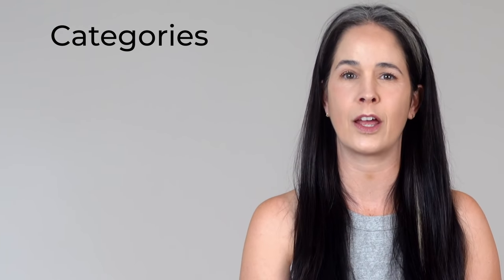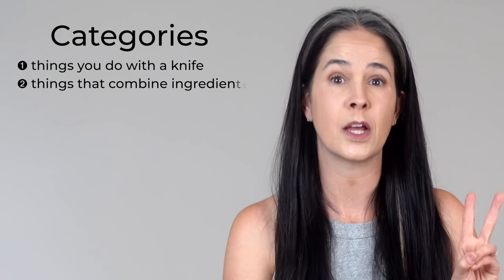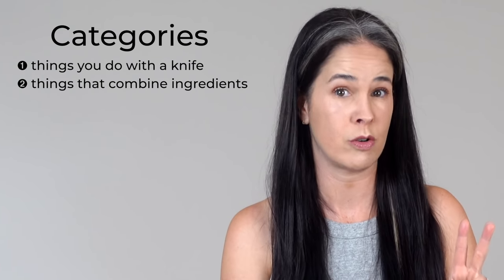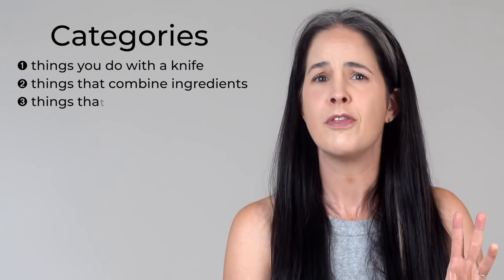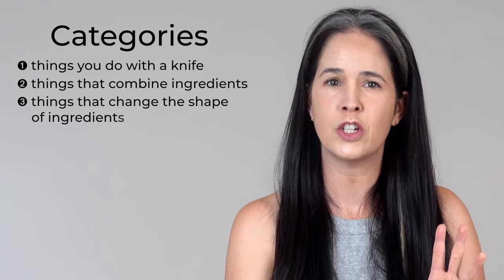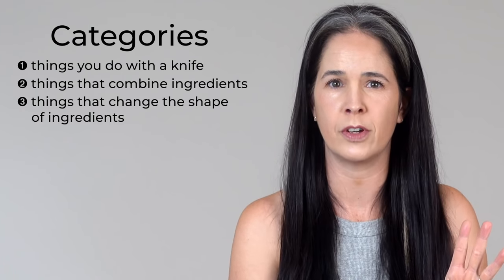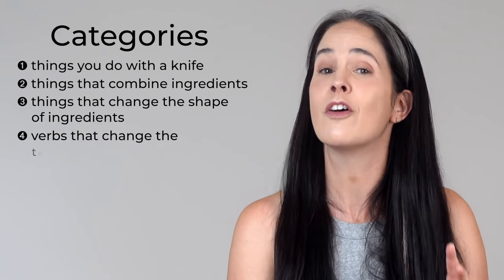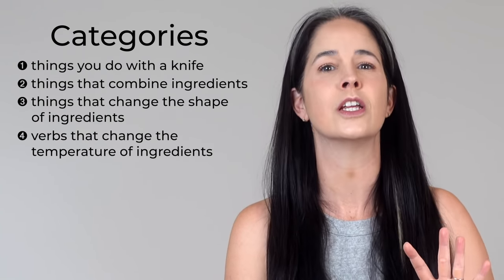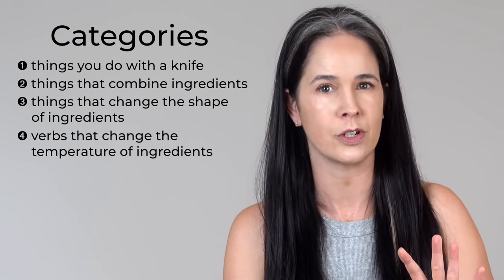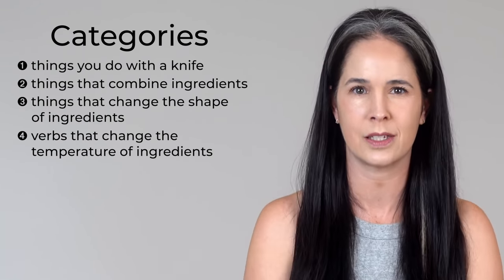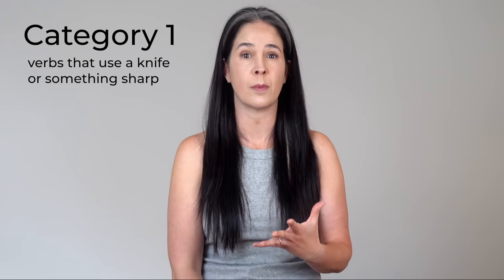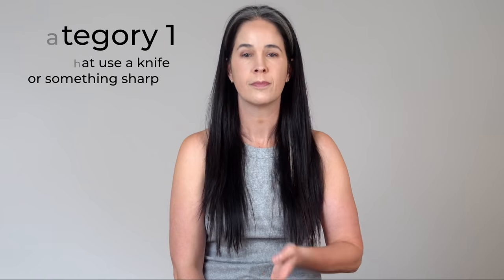We'll divide our verbs into four categories: things you do with a knife, things that combine ingredients, things that change the shape of ingredients, and verbs that change the temperature of ingredients. First, verbs that use a knife or something sharp.